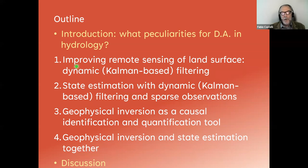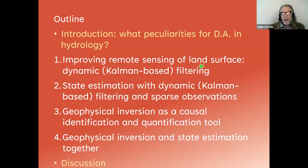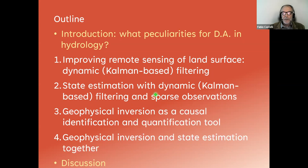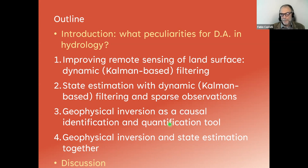I will start with a very simple example referring to a Kalman filtering of a linear system, which deals mainly with improving remote sensing of land surface. Then I will address nonlinear Kalman filtering and other state estimation problems, referring to the problem of sparse observations — a very common problem in hydrology, especially at the ground. Then I will switch to geophysical inversion from state estimation, addressing two main examples: one referring to a groundwater problem of causal identification and quantification, and then the more complex example of geophysical inversion and state estimation together, which is a quite common characteristic in many hydrological problems.